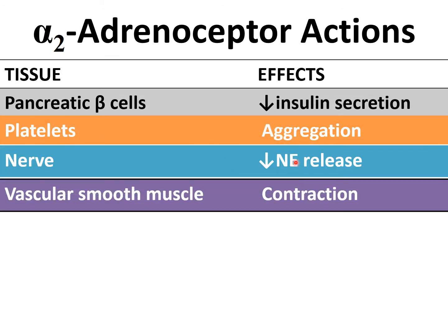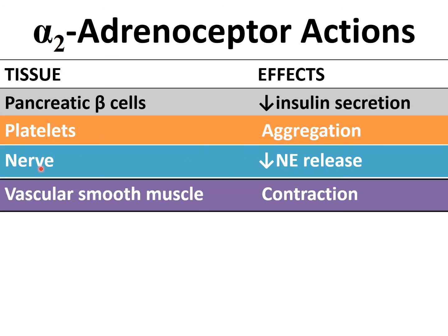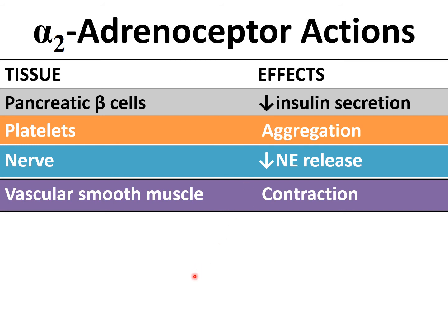In vascular smooth muscle, alpha-1 receptor stimulation causes contraction and vasoconstriction. The G-proteins involved are Gi and Gq — these two are the transducer-type G-protein subtypes associated with alpha receptors.